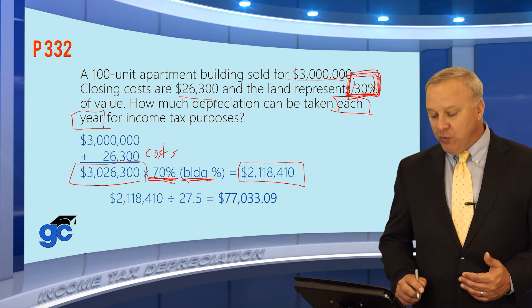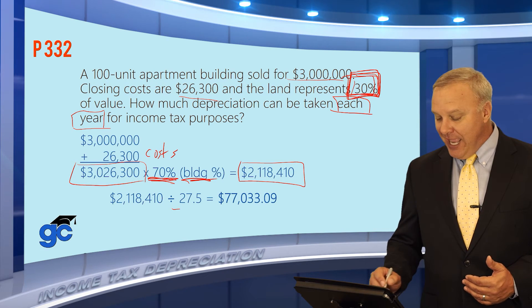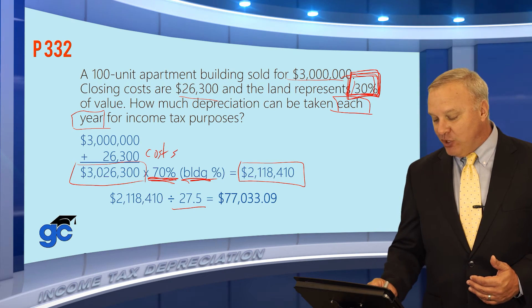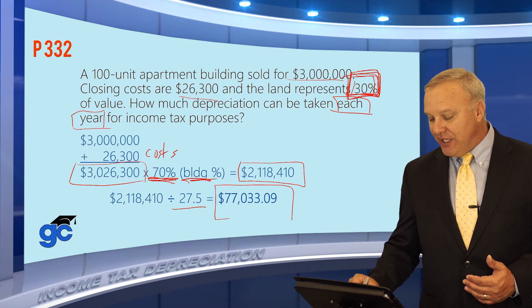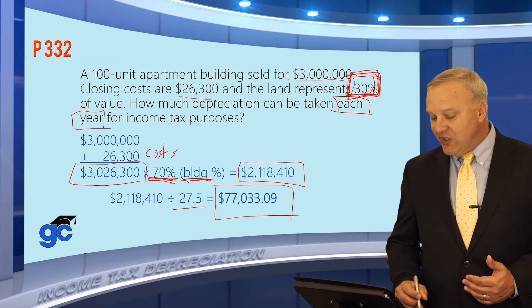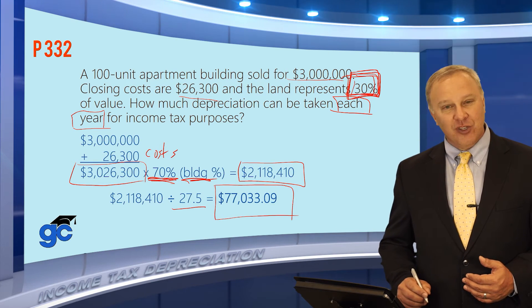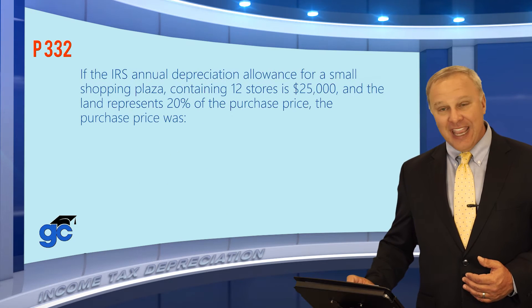This is residential property, so we divide that depreciable basis by 27.5 years. The amount of depreciation that can be taken each year is seventy-seven thousand thirty-three dollars and nine cents.